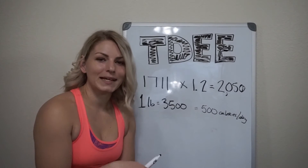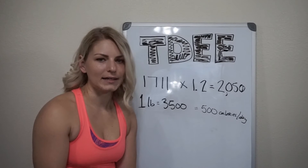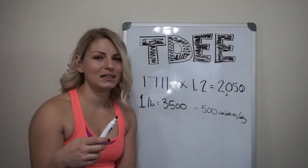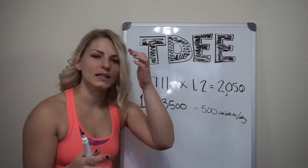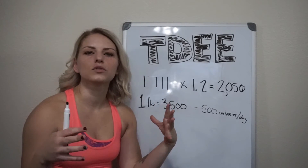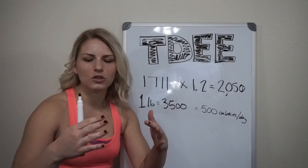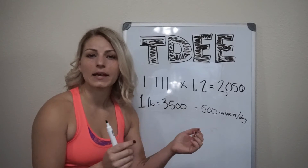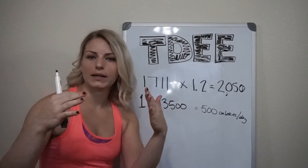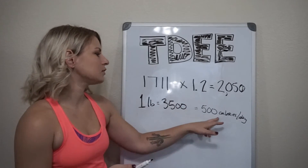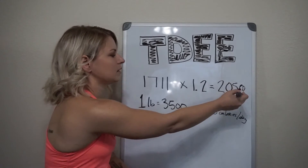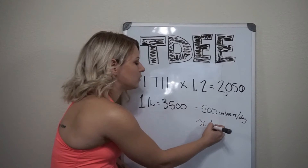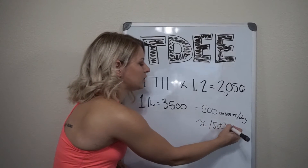For some people, this puts you at a place you really don't want to be. If my daily energy expenditure is 1,700 calories and I'm supposed to subtract 500, that puts me at 1,200 calories a day — I can't exist on something that small. Take this with a grain of salt, because I eat more than that a day and I still lose weight. This is just an outline to get you started.